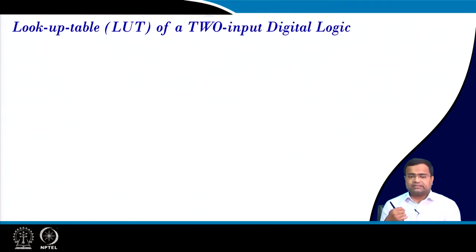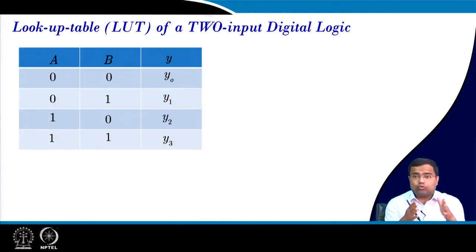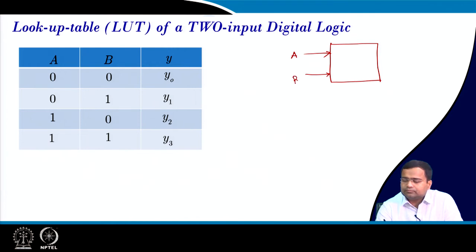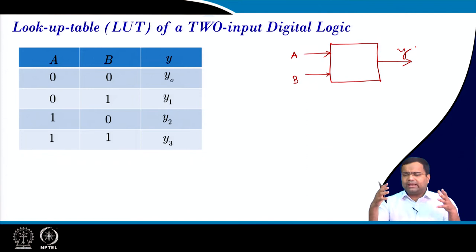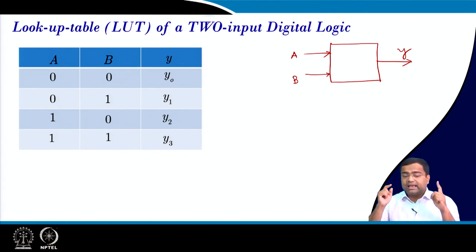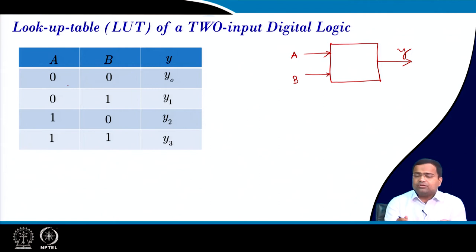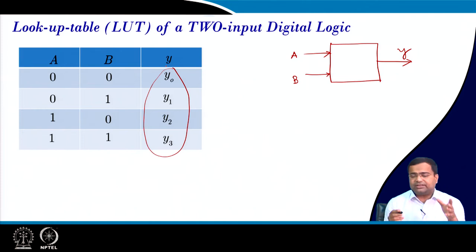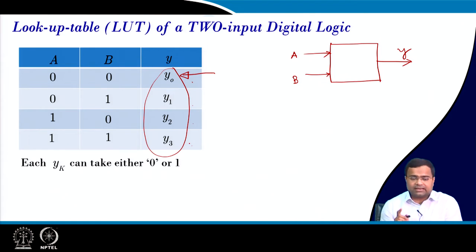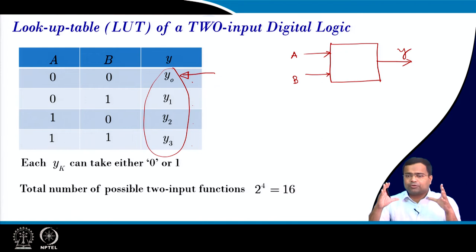If we go for lookup table based implementation, suppose we want to write in terms of a lookup table. We are talking about a two-input logic where A and B are the inputs and Y is the output. Any Boolean algebra can be represented in a truth table. Depending upon the A and B values, we can choose what y0, y1, y2, y3 are, and that will give us the function we are going to represent. In this architecture, each output element can take either 0 or 1, and there are four such elements.